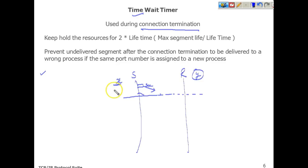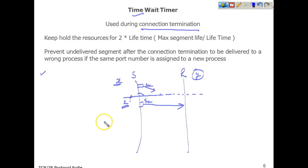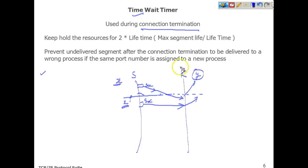Once disconnected, another process starts and happens to get the same port number X. This new process also sends a packet to the receiver with the same sequence number X. Now, if the old delayed packet also arrives at the receiver, the receiver is getting two packets with the same sequence number and same port number — creating a conflict: which packet belongs to the old process and which to the new process.